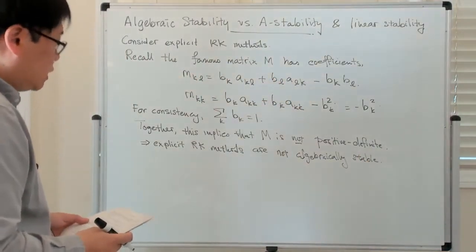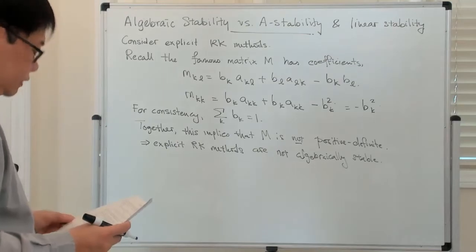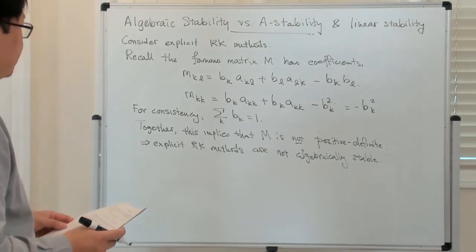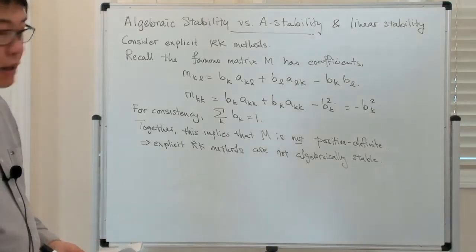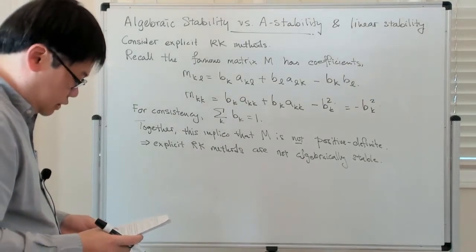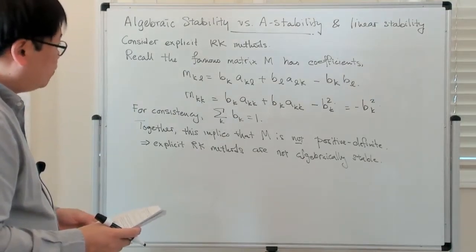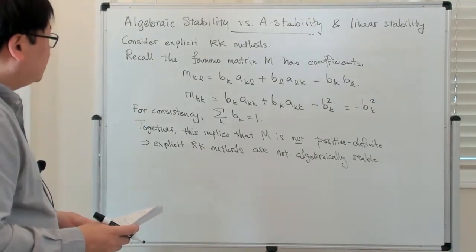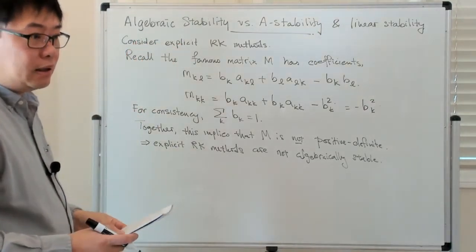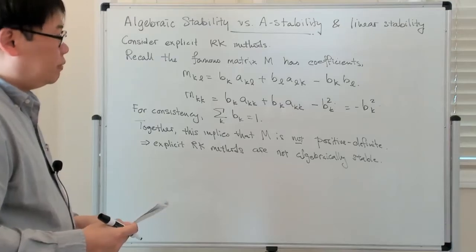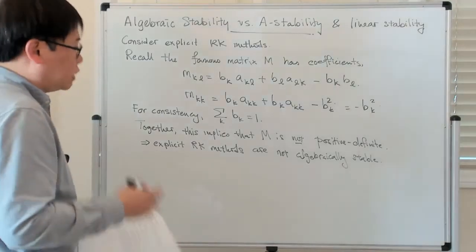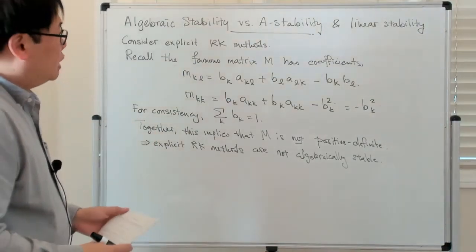There's another way to see that explicit Runge-Kutta methods cannot be algebraically stable. The observation is that when we discuss algebraic stability, it really came from this idea of monotonicity — sort of monotone equations.